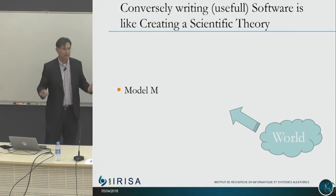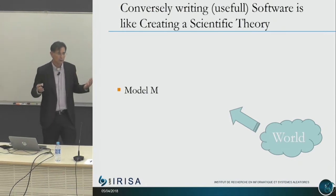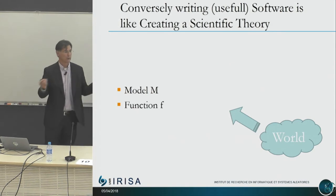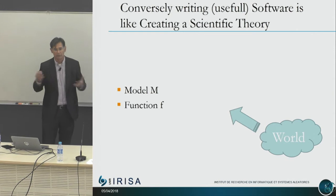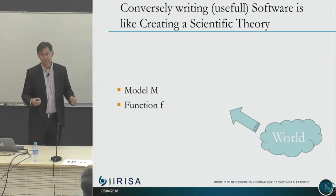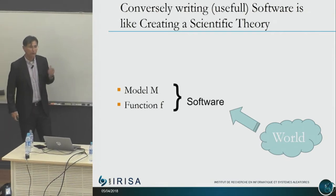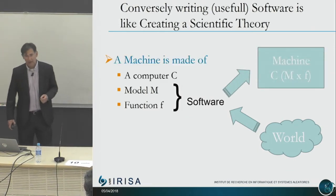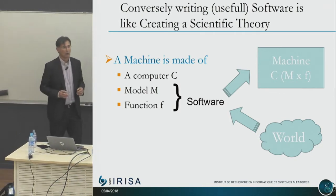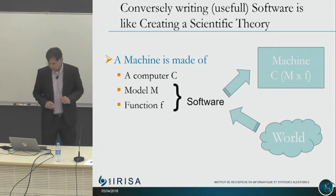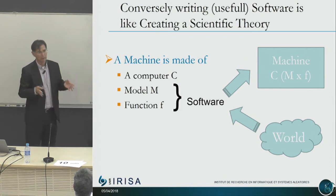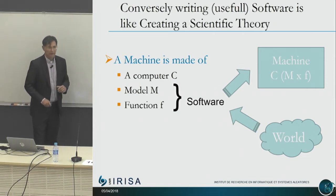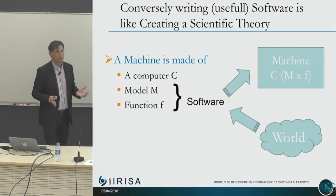The model is not just there on its own. If you build useful software, the software must do something with respect to this model — some computation. You have what we can call a function, a functionality of the software, that you compose with the model to get what you want. That's what we call software. But software by itself is useless unless you have a computer to run it. Jackson called this the machine — the computer running the software.